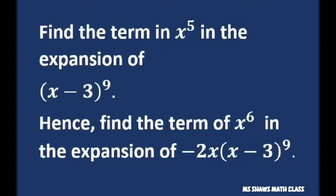Hi everyone. We're going to find the term in x to the 5th in the expansion of (x minus 3) to the 9th power. Once we do that, we're going to find the term of x to the 6th of the same quantity times negative 2x.